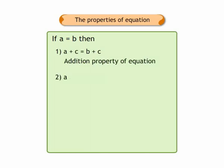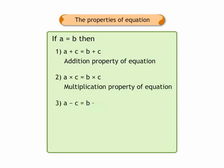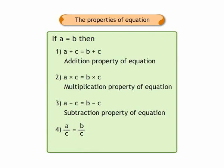2. A multiplied by C is equal to B multiplied by C. This is the multiplication property of equation. 3. A minus C is equal to B minus C. This is the subtraction property of equation. 4. A upon C is equal to B upon C. This is the division property of equation.